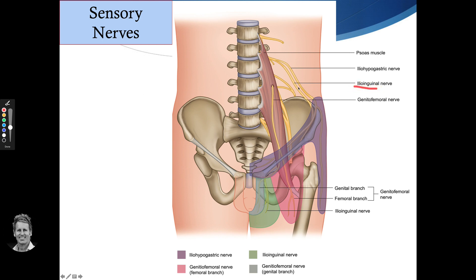The ilioinguinal nerve comes down, and the green area represents the sensation for that part of the body — basically the roof of the penis in the male, around the pubic area, and the labia in the female. That would be the ilioinguinal.